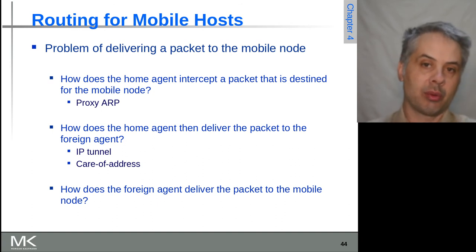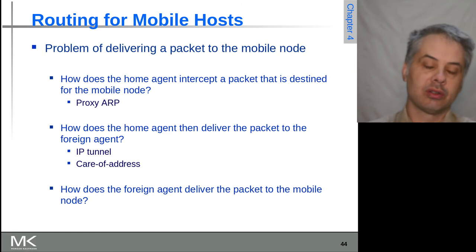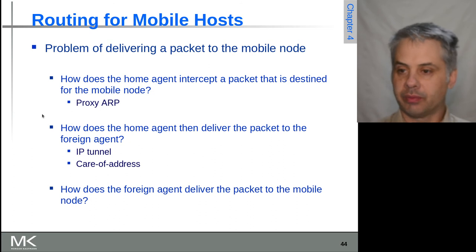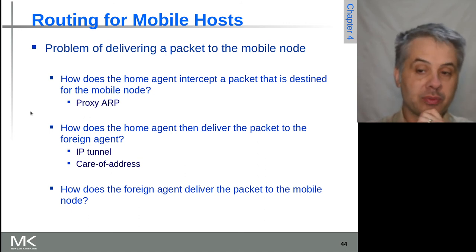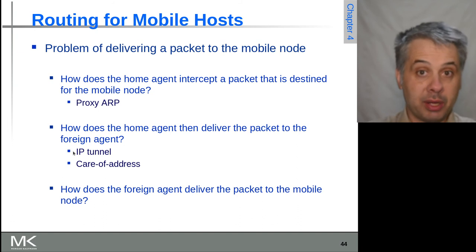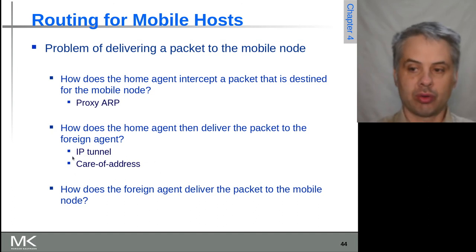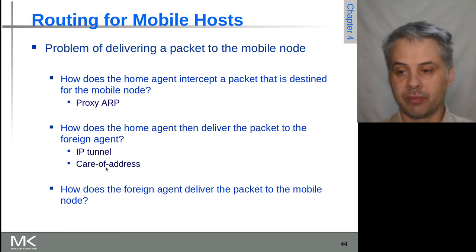To make this work, the home agent has to intercept traffic meant for the mobile node. It effectively does a proxy ARP — responding to ARP requests for the mobile node so that traffic on the local network flows to the home agent. The home agent then forwards the traffic using either an IP tunnel or a care-of address with a foreign agent. The exterior address of the packet has to match what the internet is routing, which is why you use an IP tunnel — IP tunneled inside IP so the outside address is valid — or a care-of address, where the node decapsulates the outer envelope and sends it to the final destination.